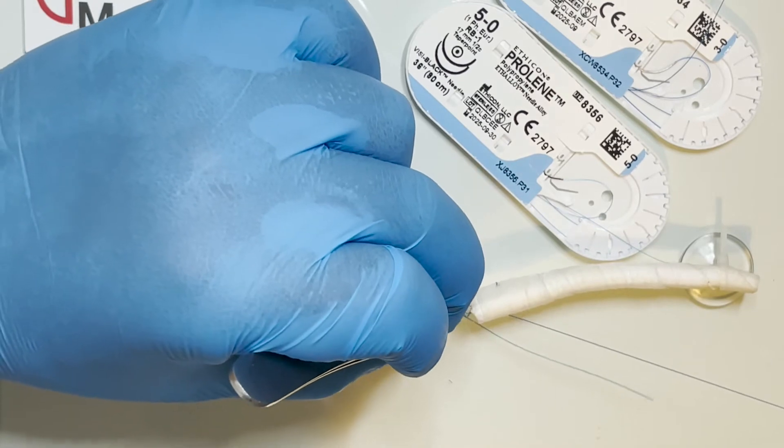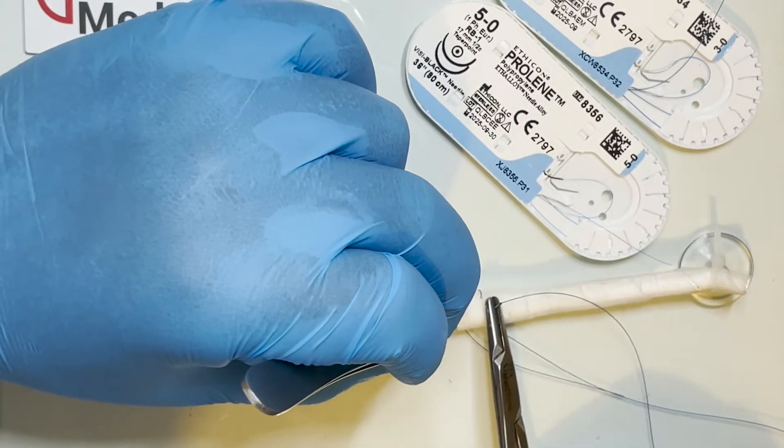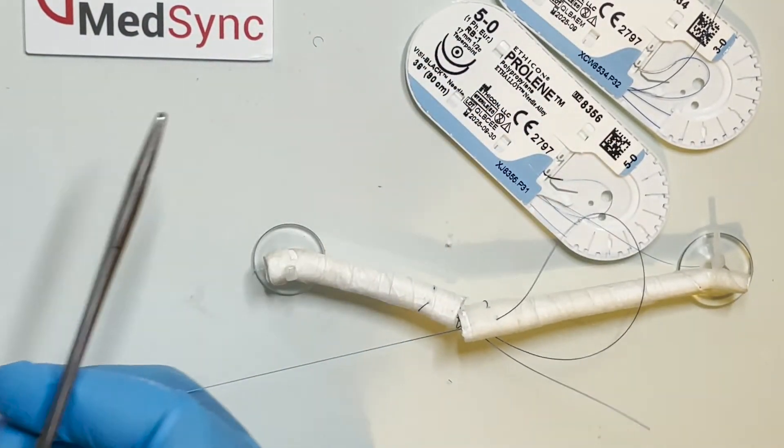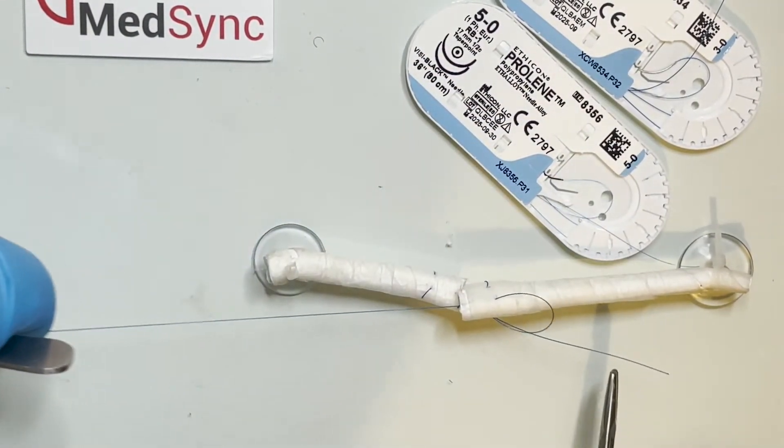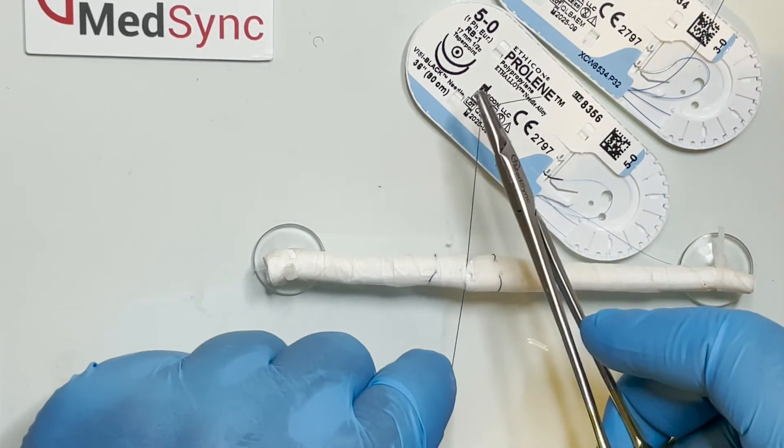A final pass is made axially back into the repair site and the suture ends tied. For a monofilament, four to six reef knots is recommended.